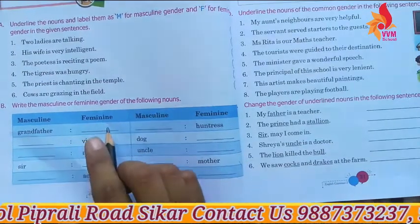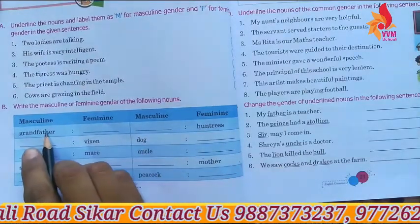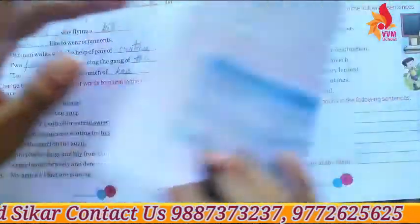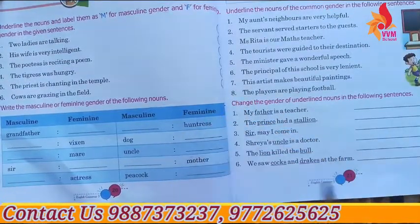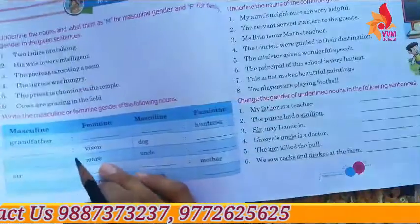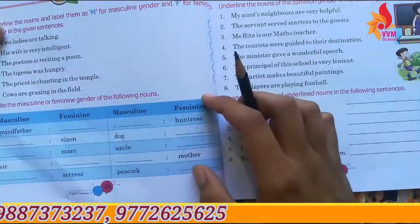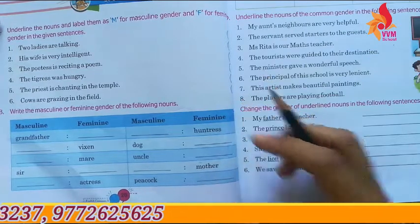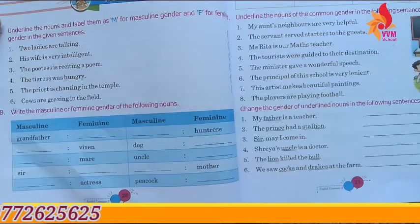Write the masculine and feminine gender. For example, grandfather and grandmother. You have to learn the table. If you have learned it, you will solve it easily. So do this exercise as homework — Question number B. If you have a problem, please ask me, but first try yourself.